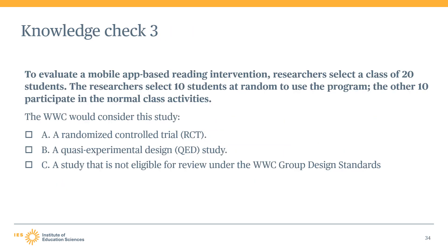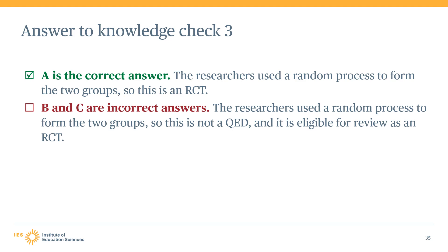Knowledge Check 3: To evaluate a mobile app-based reading intervention, researchers select a class of 20 students. Ten students are selected at random to use the program, and the other 10 students participate in normal class activities. The answer is A — this is an RCT. The study randomly assigned all 20 students. Assignment was entirely by chance and each unit had a non-zero probability of assignment to each group. The study text provides no reason to question the randomization process, so we can conclude this is an RCT.